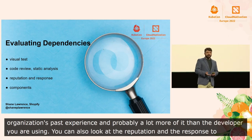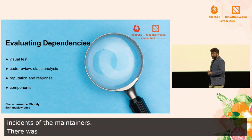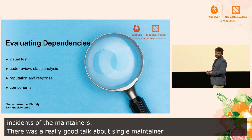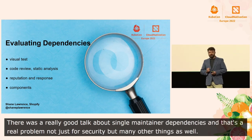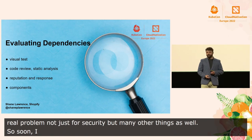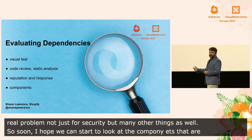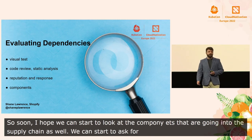You can also look at the reputation and the response to previous incidents of the maintainers. There was a really good talk yesterday about single maintainer dependencies — and that's a real problem, not just for security, but for many other things as well. Soon, I hope that we can start to look at the components that are going into the supply chain. We can expect more from our suppliers. We can start to ask for receipts, ask for an SBOM, and ask what your software is made of.